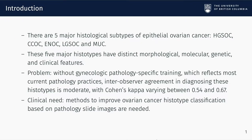Ovarian cancer ranks fifth in cancer deaths among women, accounting for more deaths than any other cancer of the female reproductive system in North America. There are five major histological subtypes of epithelial ovarian cancer, and they have distinct morphological, molecular, genetic, and clinical features.